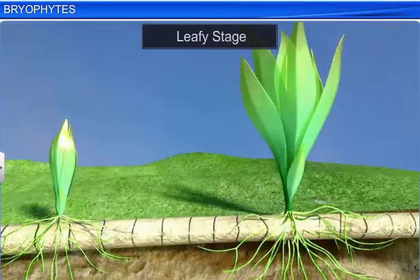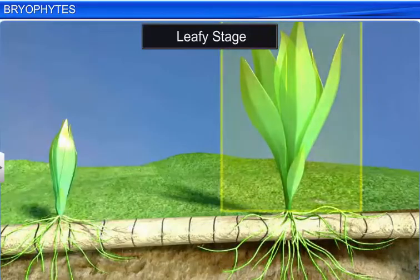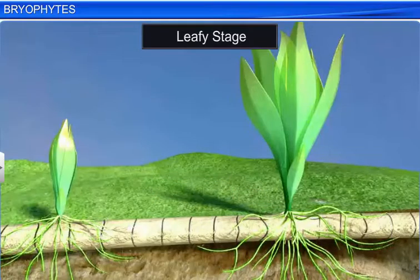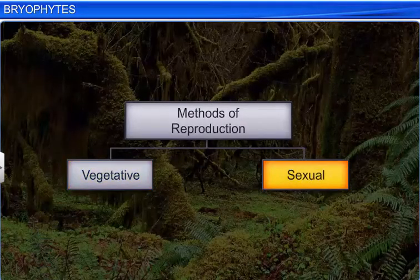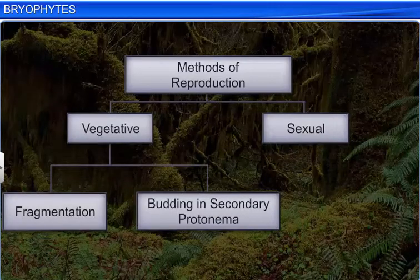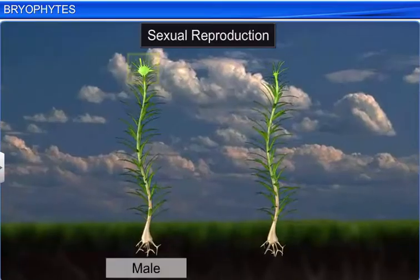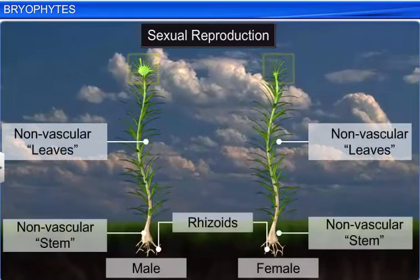The second stage is the leafy stage, where the primary protonema develops into the secondary protonema as a lateral bud. The buds consist of upright, slender axes that bear spirally arranged leaves, attached to the soil through branched rhizoids. The sexual organs develop during the leafy stage. Mosses reproduce vegetatively and sexually. Vegetative reproduction is by fragmentation and budding in the secondary protonema. In sexual reproduction, the male and female sex organs are produced at the apex of the leafy shoots.